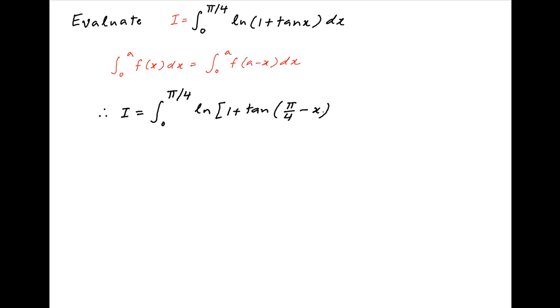We get ln of 1 plus tan of π/4 minus x dx. tan of π/4 minus x is equal to tan π/4 minus tan x divided by 1 plus tan π/4 times tan x.